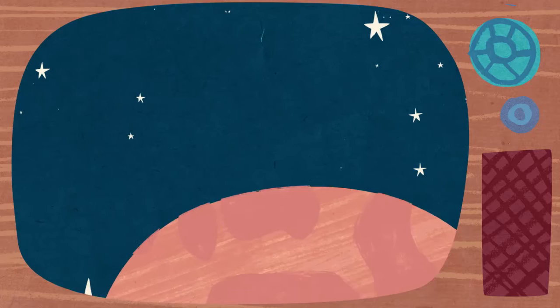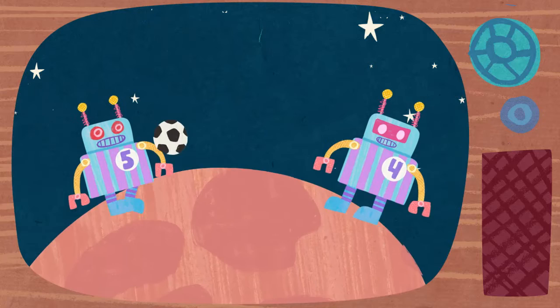Then over on Mars, pitch problems hampered our footbots. Once a warm, wet world, Mars is now a cold desert planet and the pitch is far from tickety-boo.